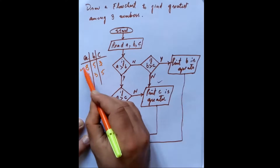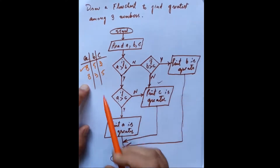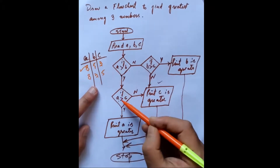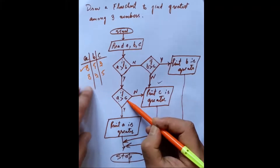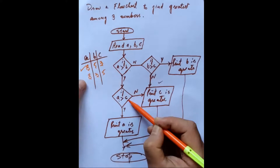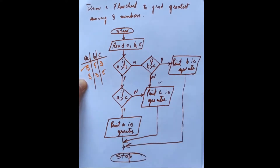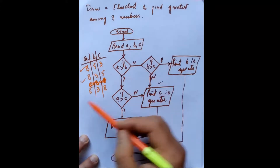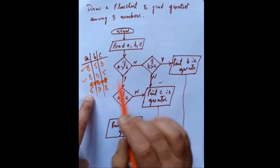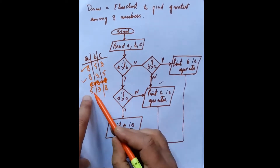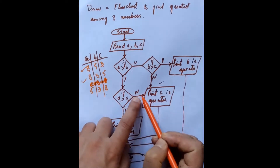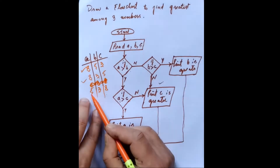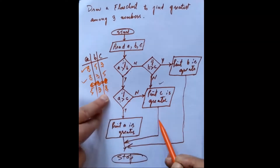Third case: what if it was 5, 3, 8? Is A greater than B? Yes, because 5 is greater than 3. Then is A greater than C? Is 5 greater than 8? No. So it will go through the no branch. Then Print C is greater — because B is already smaller than A, and now A is also smaller than C, so C is greater. Then it gets stopped.